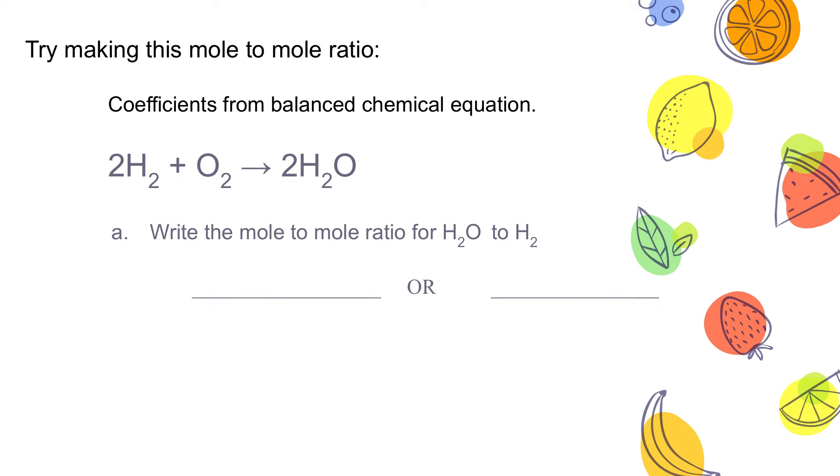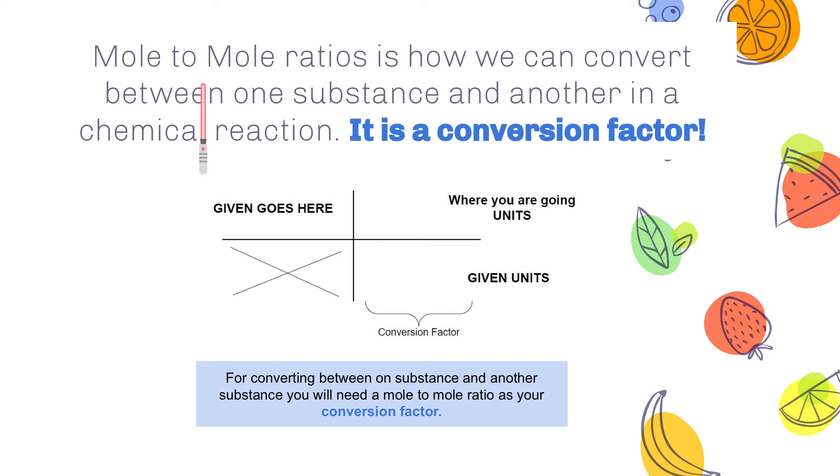So try making this mole-to-mole ratio. So here's the coefficients from the balanced chemical equation. And then write the mole-to-mole ratio for H2O to H2. So if we were to do that, we can write 2 mole H2 over 2 mole H2O, or 2 mole H2O over 2 mole H2. The mole-to-mole ratios is how we convert between one substance and another in a chemical reaction. It's the conversion factor.